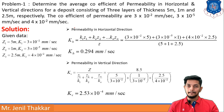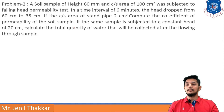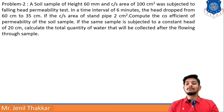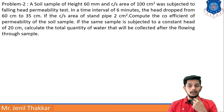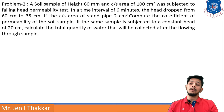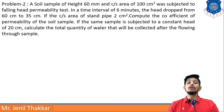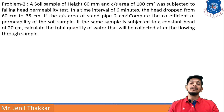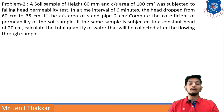Problem 2: A soil sample of height 60 mm and cross-sectional area 100 cm² was subjected to a falling head permeability test. In a time interval of 6 minutes, the head dropped from 60 cm to 35 cm. The cross-sectional area of the standpipe is 2 cm². Compute the coefficient of permeability. Also, if the sample is subjected to a constant head of 20 cm, calculate the total quantity of water collected.